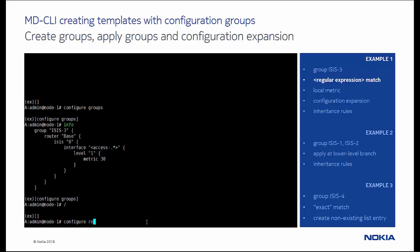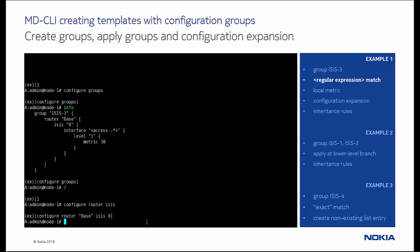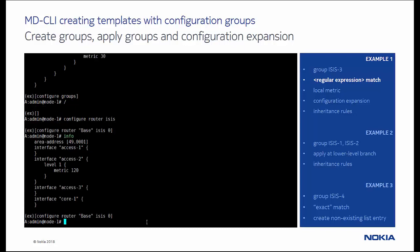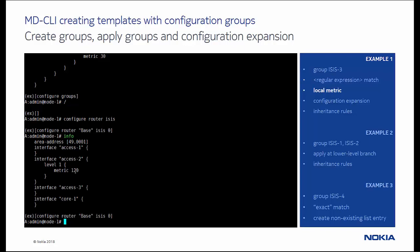Next, we navigate to the ISIS configuration branch, and see three access interfaces and one core interface configured. Notice that access interface 2 has a locally configured metric of 120.